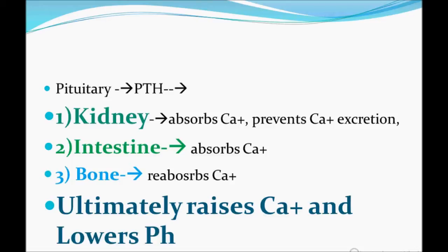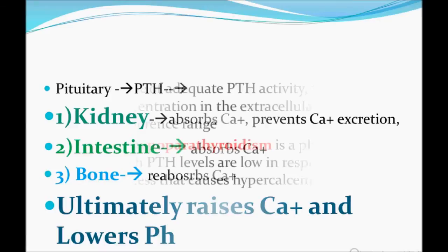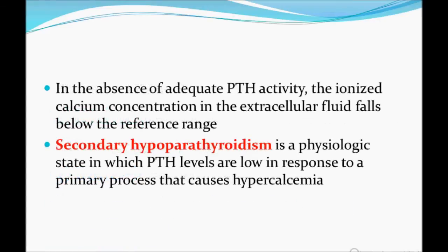So what happens to the bone? The bone goes weaker. Remember, this is normal physiology I'm discussing. Ultimately, PTH raises the calcium. And to lower the phosphate, PTH causes excretion of phosphorus from the kidney, so it lowers the phosphate in the blood. This is how it acts.